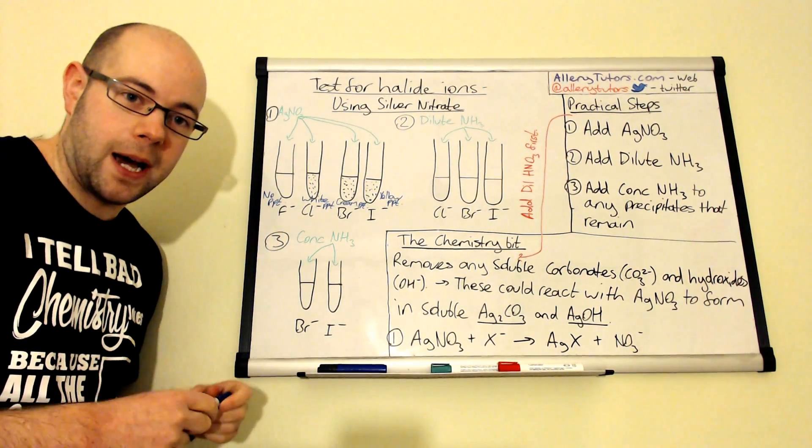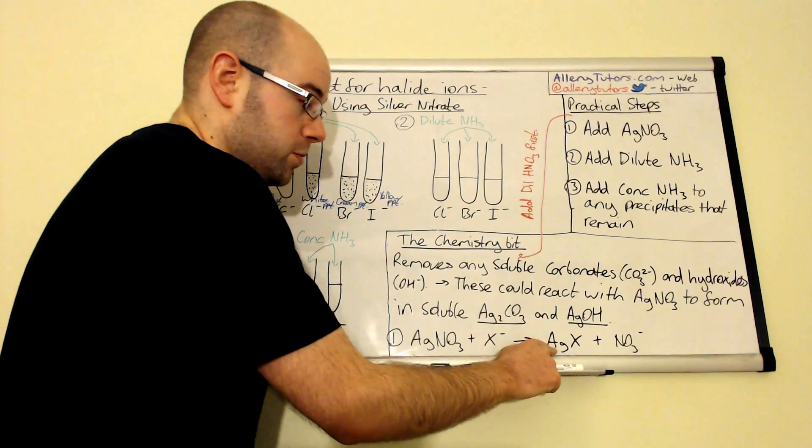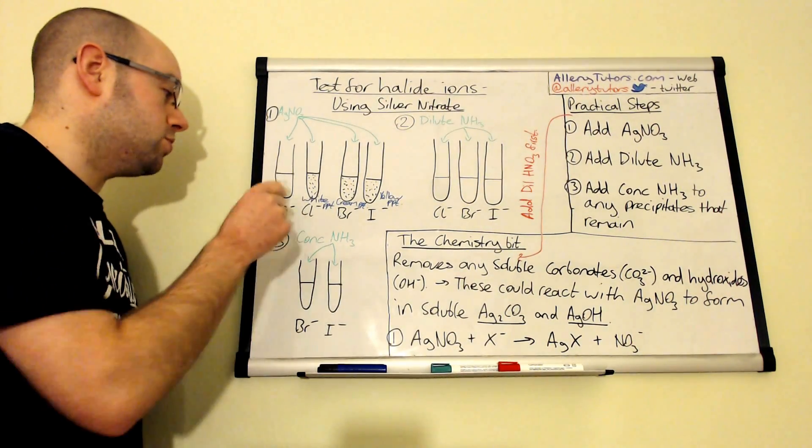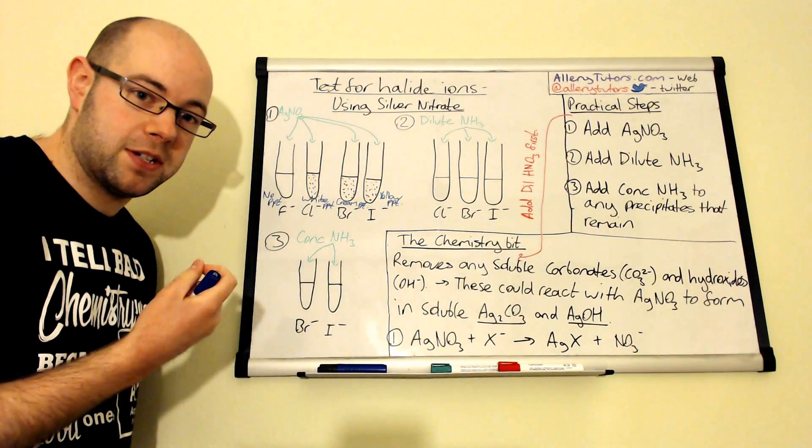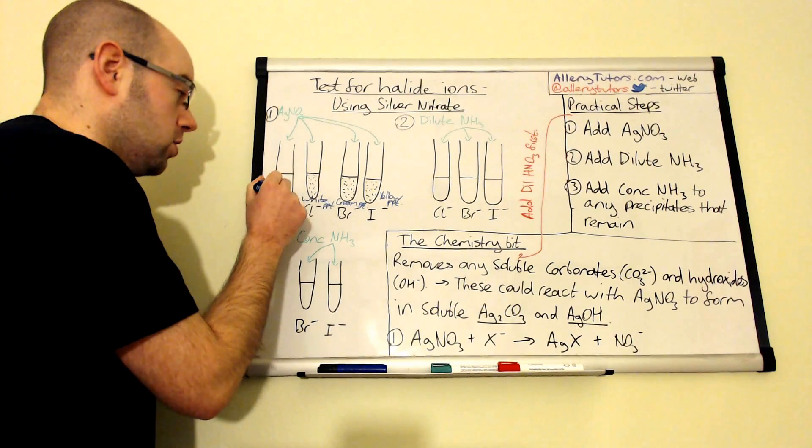There is a reaction that happens. Obviously, the silver nitrate will react with fluoride and it'll form silver fluoride. Your silver fluoride, though, is soluble. So never say that there's no reaction because there is a reaction. It's just we can't visibly see it. So there's no visible change.